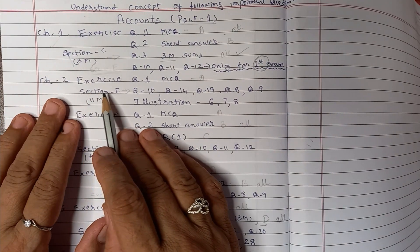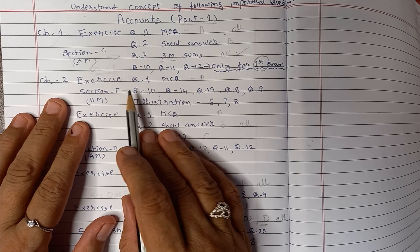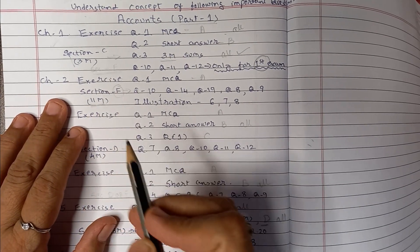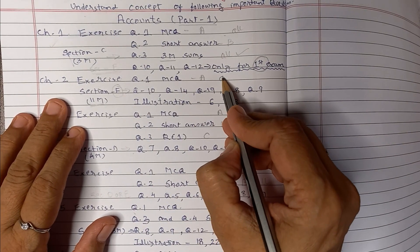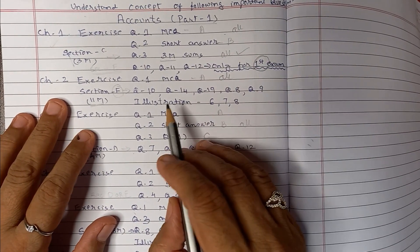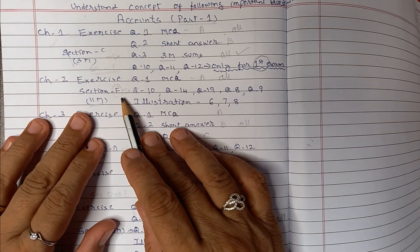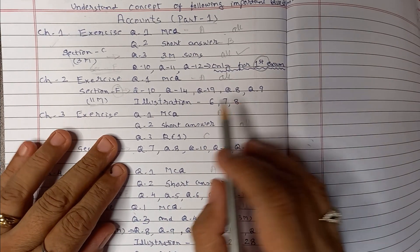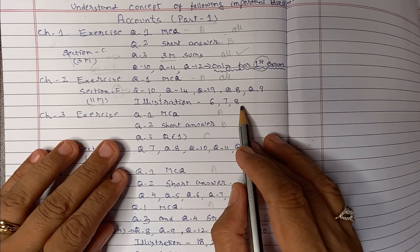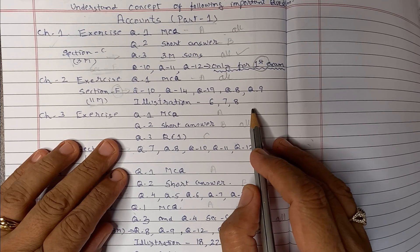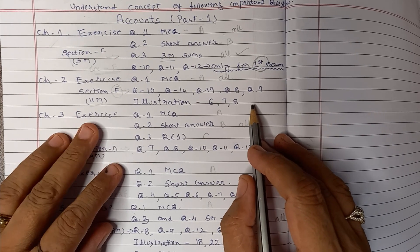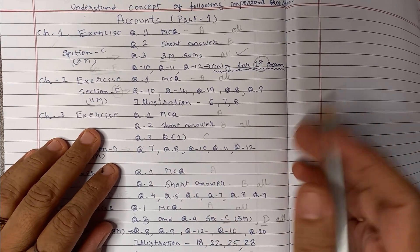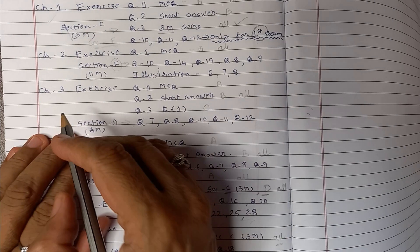Chapter 2, that is final account. We know very well you used to have an 11 mark question in the section F. So MCQs are to be done, all that is for general preparation. For F section questions like question 10, 14, 19, 8, 9, and illustrations you have 6, 7, 8. All these illustrations have good adjustments. These many adjustments are sufficient enough to do any other question whatever is asked.